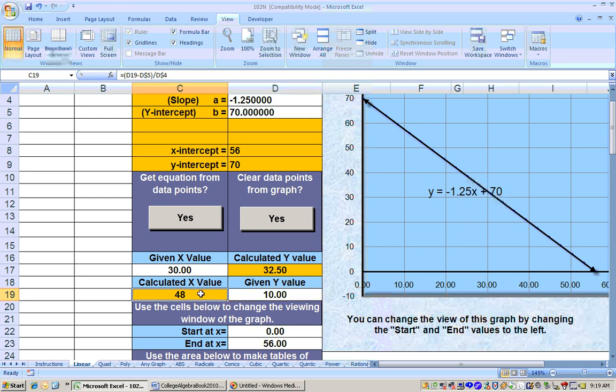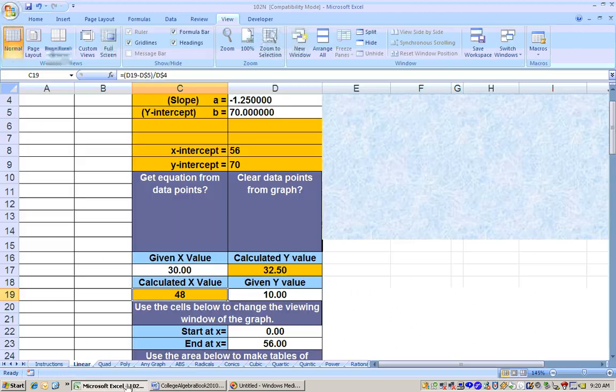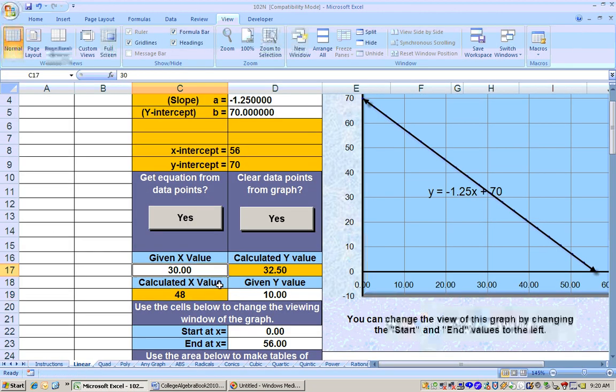So that means 48 years after 1950, 10% of people smoked. And the last problem on this part is the percentage of people that smoked in 1980. 1980 is 30 years after 1950, so just plug 30 in for t, and we get 32.5% of people smoked in 1980.